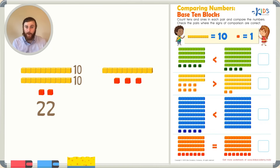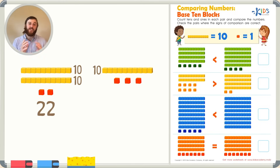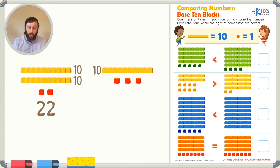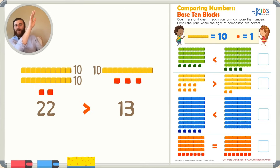How about the number on the right side? I see one 10. Already I'm starting to think if there's only one 10 in this number, it's probably smaller or less than 22. Let's count all the base 10 blocks just to be sure. After 10, we can count on with our 3 cubes: 10, 11, 12, 13. So we know that 22 is greater than 13. We'll draw the comparison symbol with the mouth open towards the bigger number, because you will always eat the bigger number.